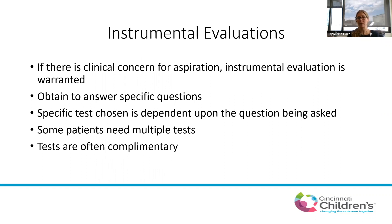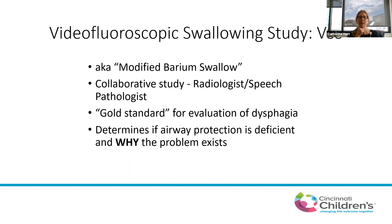In kids where there's clinical concern for aspiration, they almost always get some sort of instrumental evaluation. This is obtained to answer specific questions about their swallowing. The test chosen depends on the question being asked, and it's not uncommon that kids get multiple iterations of these tests because they're complementary and give slightly different information. The first main test is the video fluoroscopic swallow study, also referred to as a modified barium swallow. Done collaboratively between a radiologist and speech-language pathologist, it's considered the gold standard for evaluation of dysphagia and aspiration.